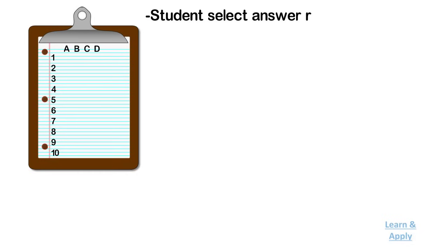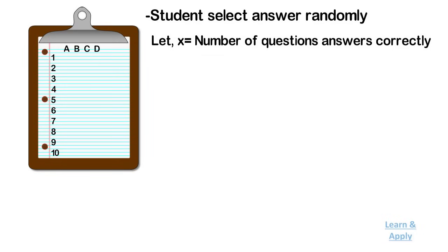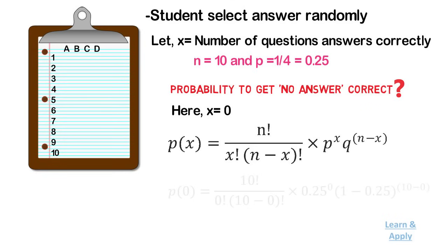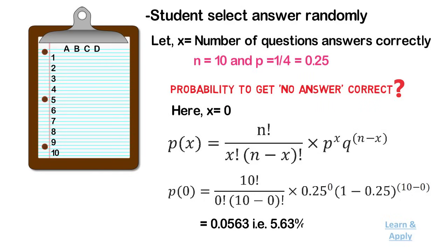For example, consider an exam that contains 10 multiple choice questions with 4 possible choices for each question, only one of which is correct. Suppose a student selects the answer for every question randomly. Let x be the number of questions the student answers correctly. Then x has a binomial distribution with parameters n = 10 and p = 1/4, that is 0.25. What is the probability for the student to get no answer correct? Here x = 0. So, P(0) = 10! × 0.25^0 × (1 − 0.25)^(10−0) / (0! × (10−0)!) = 0.0563.